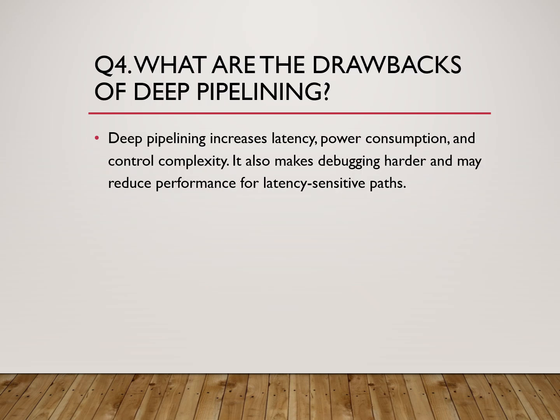Question number four: what are the drawbacks of deep pipelining? Deep pipelining comes with several drawbacks — it increases latency, register count, clock power consumption, and control logic complexity. It also makes debugging and verification more difficult. In some cases, excessive pipelining can actually reduce performance for latency-sensitive operations. That's why NVIDIA prefers balanced pipelining, not blindly adding registers everywhere. Over-pipelining is as harmful as under-pipelining.